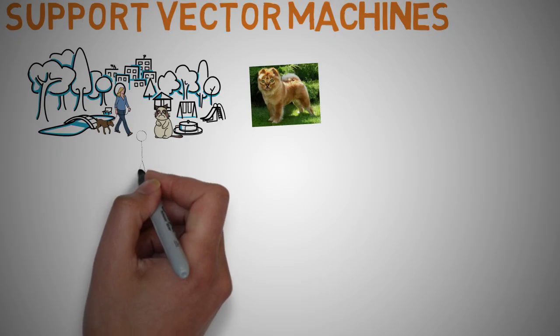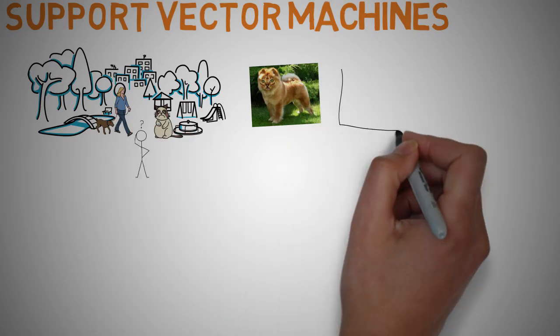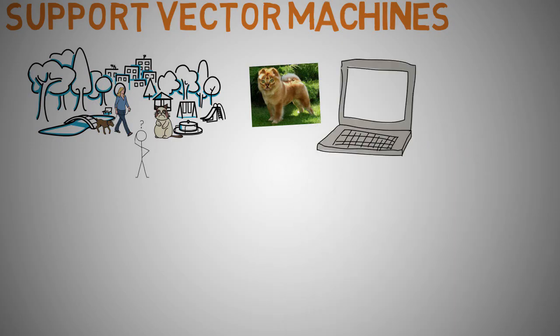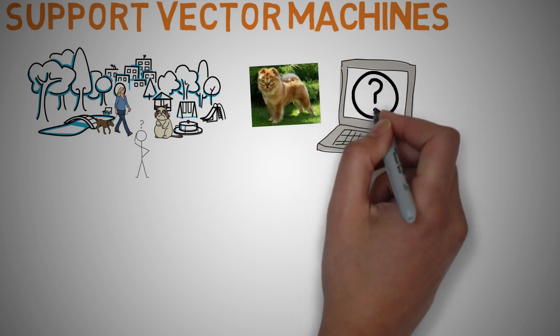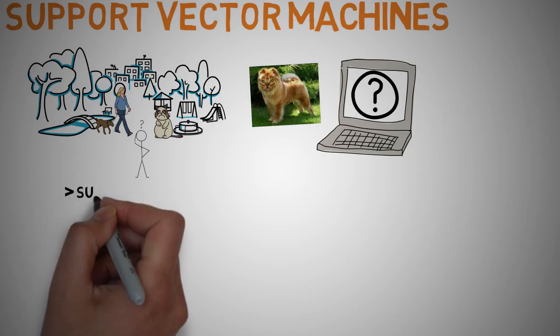Now if it was challenging for me to figure it out, imagine how difficult and challenging it would be for a computer to precisely classify between a dog and a cat. A really great algorithm for these types of applications is the support vector machine algorithm or SVM.